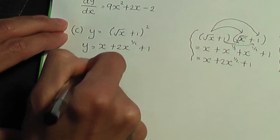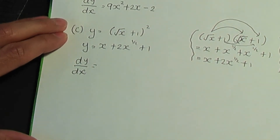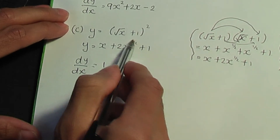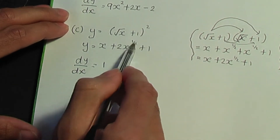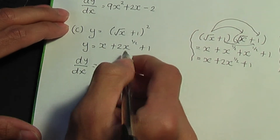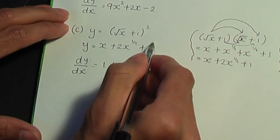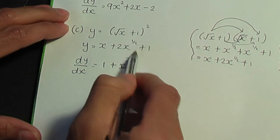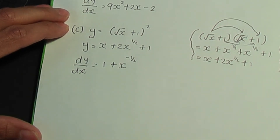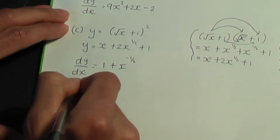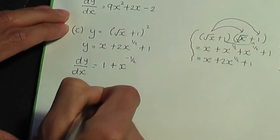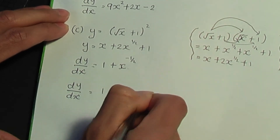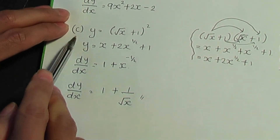Now we're in a position to work out the gradient function dy by dx. If I differentiate x, we get 1. For the second term, multiply by the power: half times 2 is 1. Subtract 1 from the power: half minus 1 is minus half. For the constant plus 1, differentiating gives 0. So we can rewrite the answer: dy by dx equals 1 plus x to the power minus half, which is the same as 1 plus 1 over root x. This is the solution to part C.